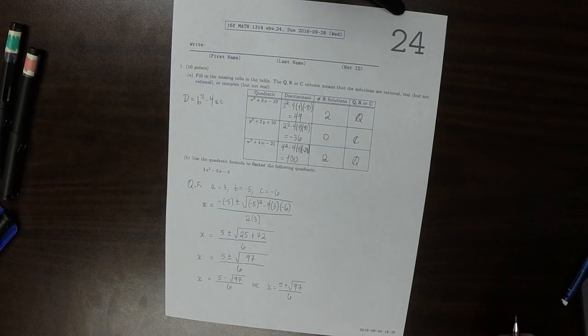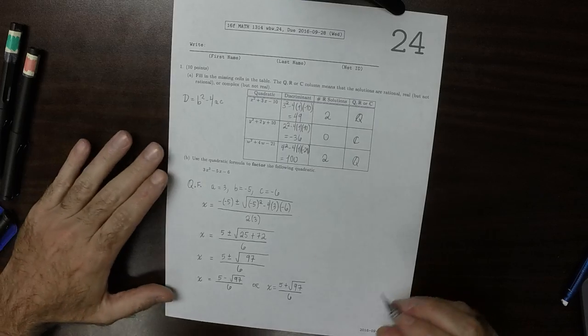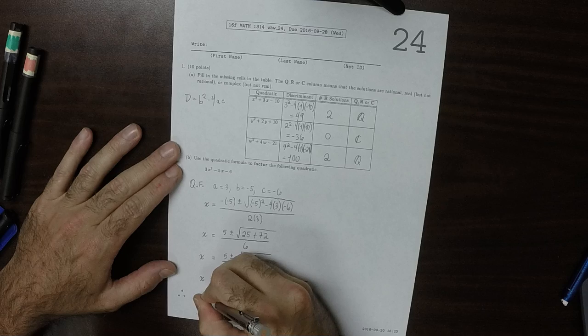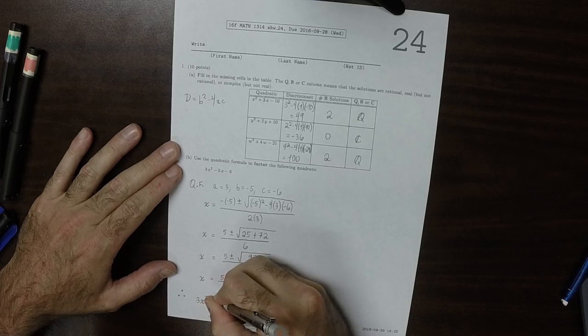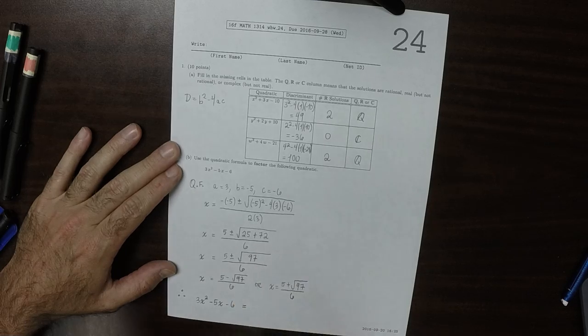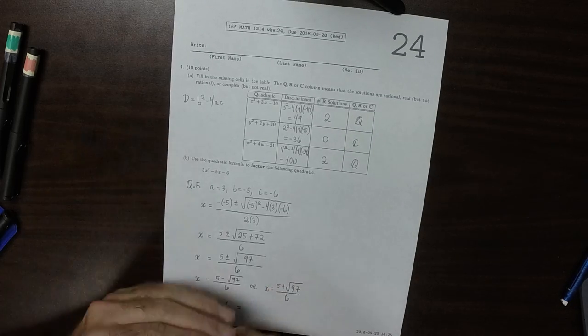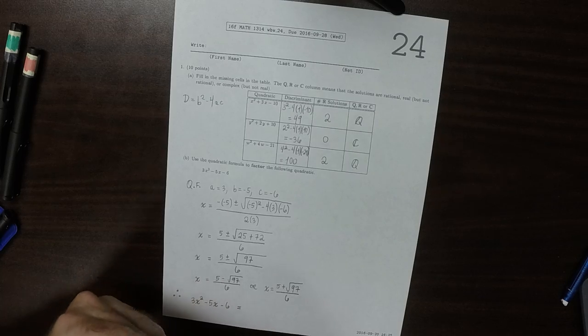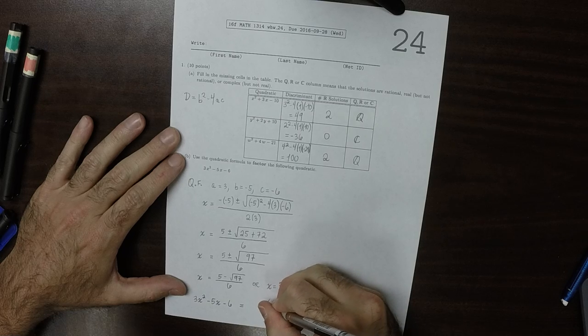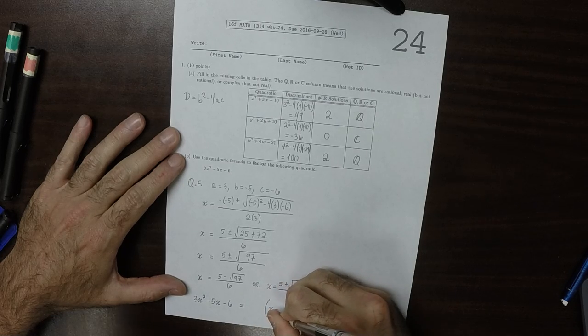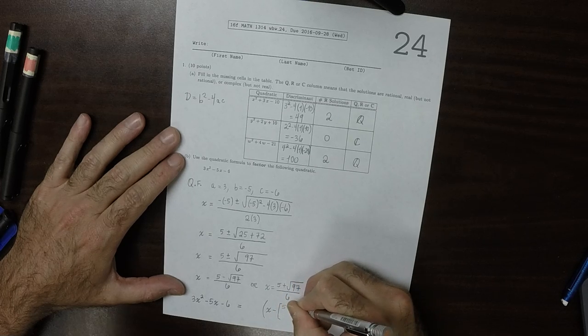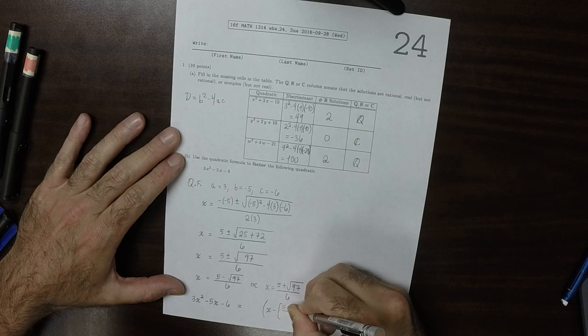And then that means that the factorization of 3x squared minus 5x minus 6 is, well, one of the factors must be x minus that one, so x minus the first zero, so x minus 5 minus the square root of 97 over 6.